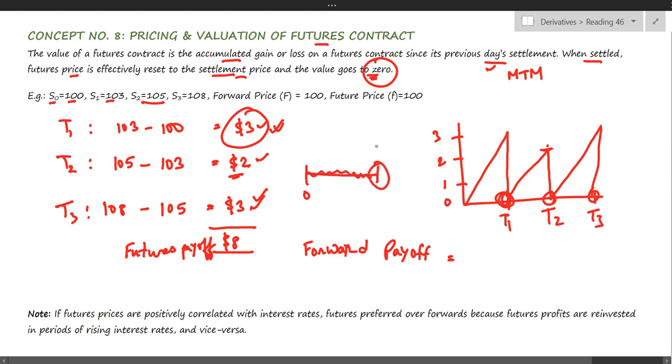Only at expiry are the prices compared. At expiry, the price is $108 and the forward price is $100, so the difference of $8 will be the payoff.